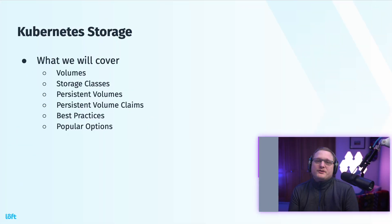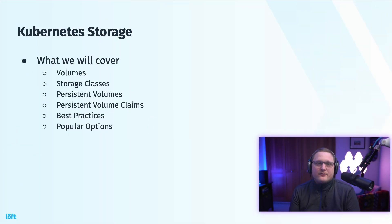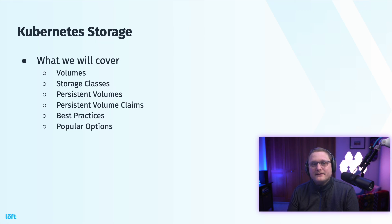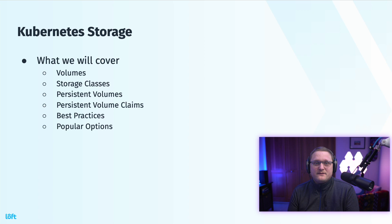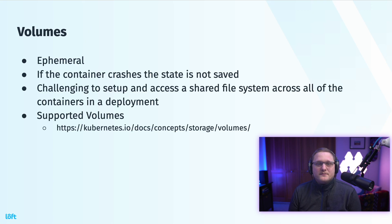When it comes to Kubernetes storage, there are a couple of things that we have to cover. We've got to start out with volumes, storage classes, persistent volumes, and persistent volume claims. Then we're going to look at best practices and popular options. You've probably heard of these — PVs and PVCs — but what's the difference? Let's start out with volumes.